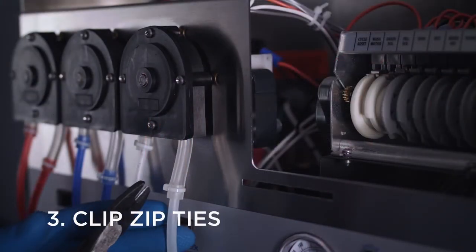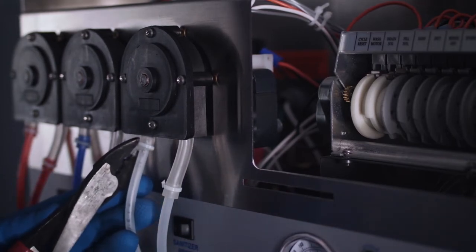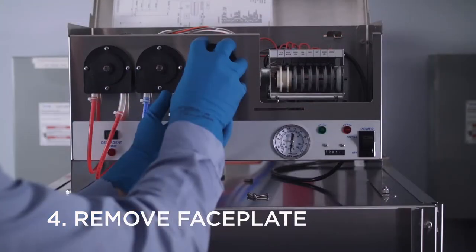Locate the squeeze tube which needs to be replaced and clip the zip ties to unseal both the incoming and outgoing chemical lines. Next, unscrew and remove the faceplate.